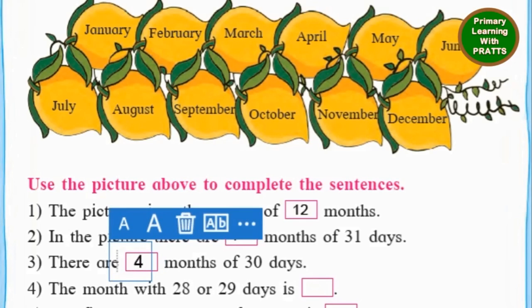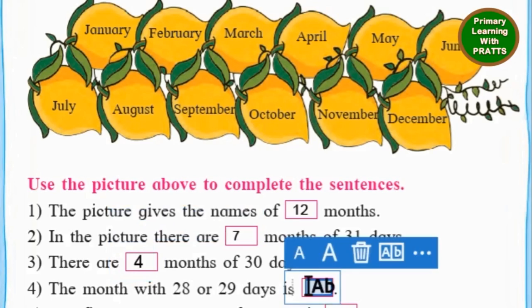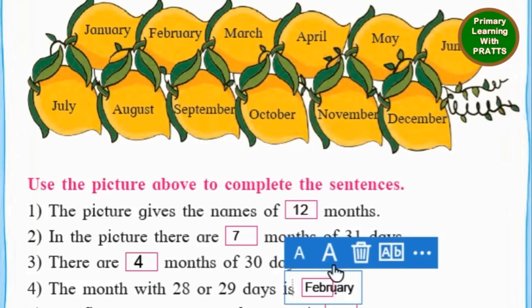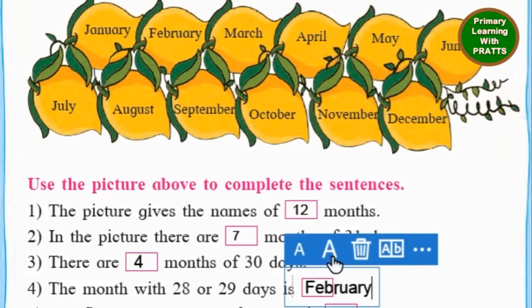The month with 28 or 29 days is February. So let's write February. Pronounce it correctly so you will remember the spelling: Feb-ru-a-ry. If you say 'Feburary' you will not remember the spelling. You must say February, and then you will remember the spelling.